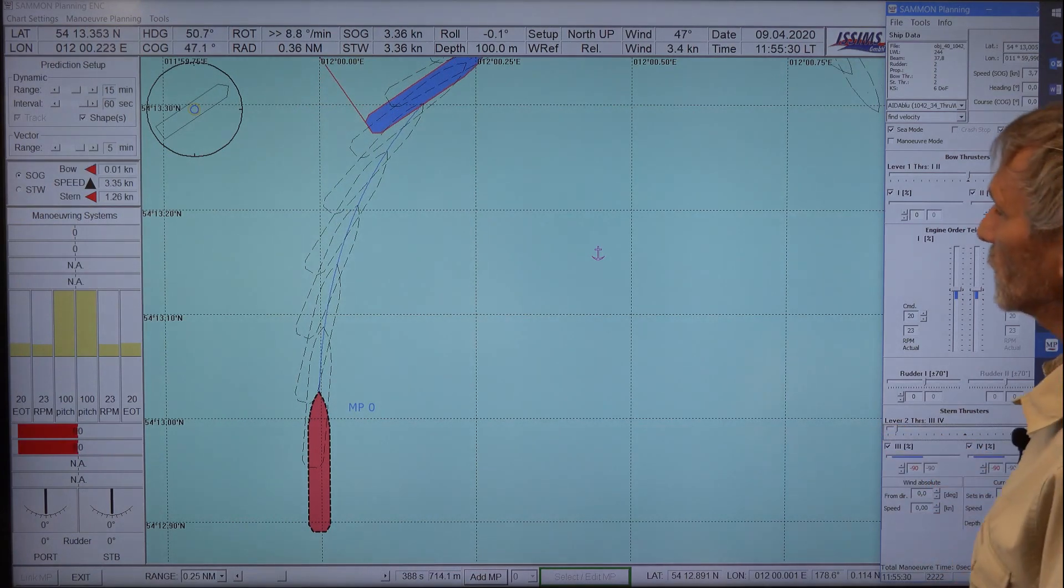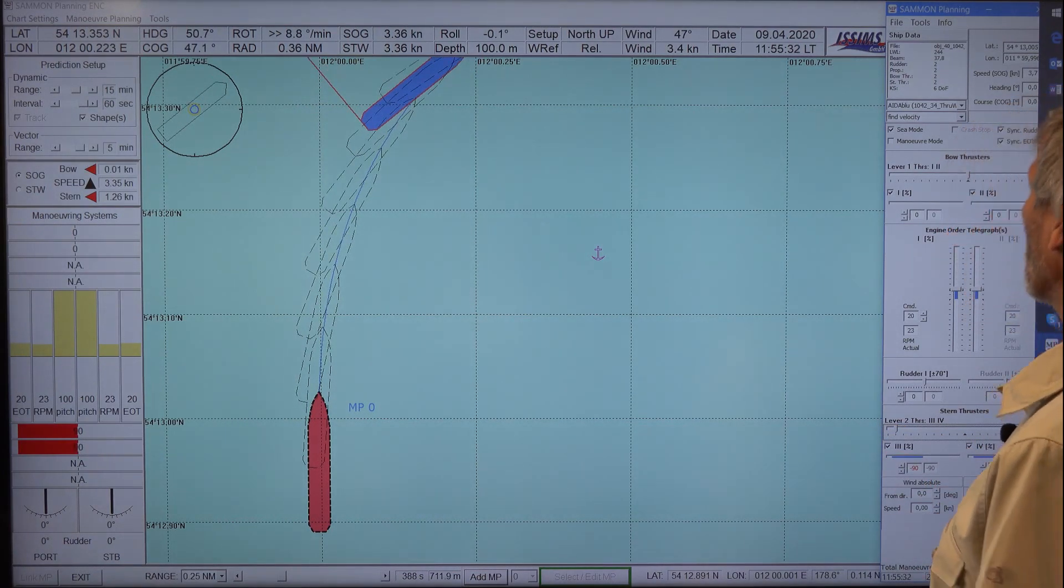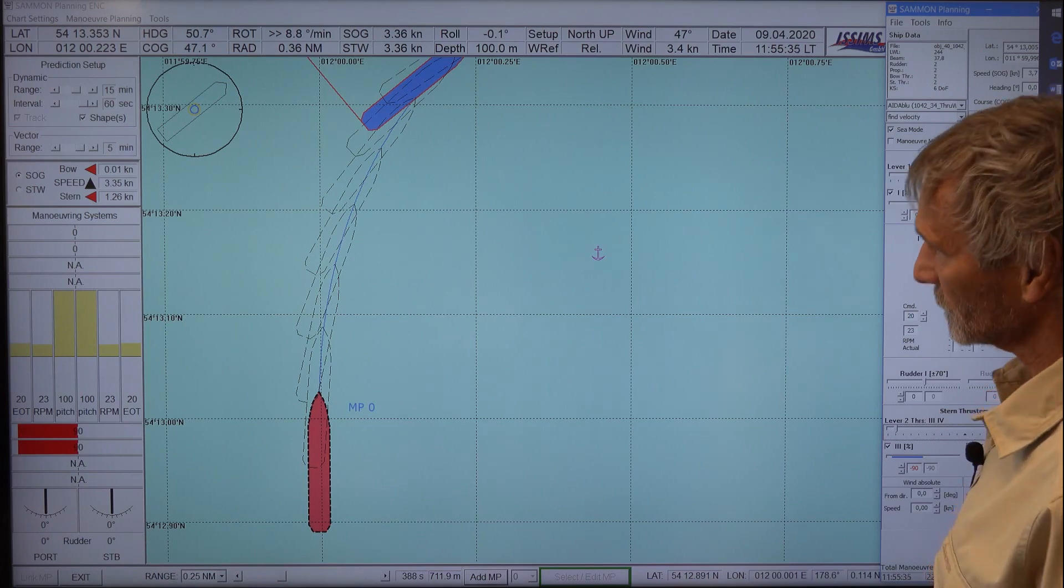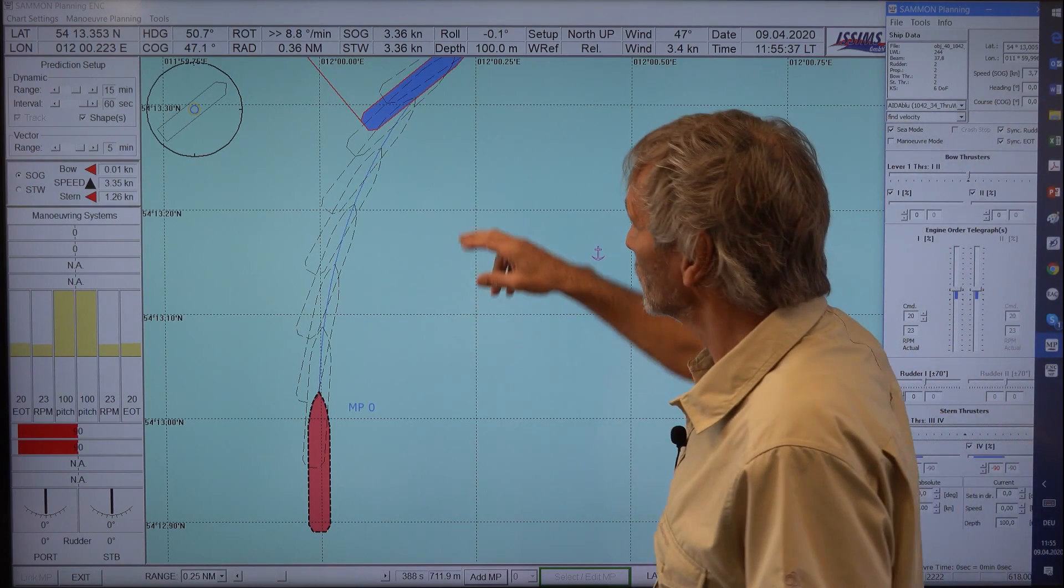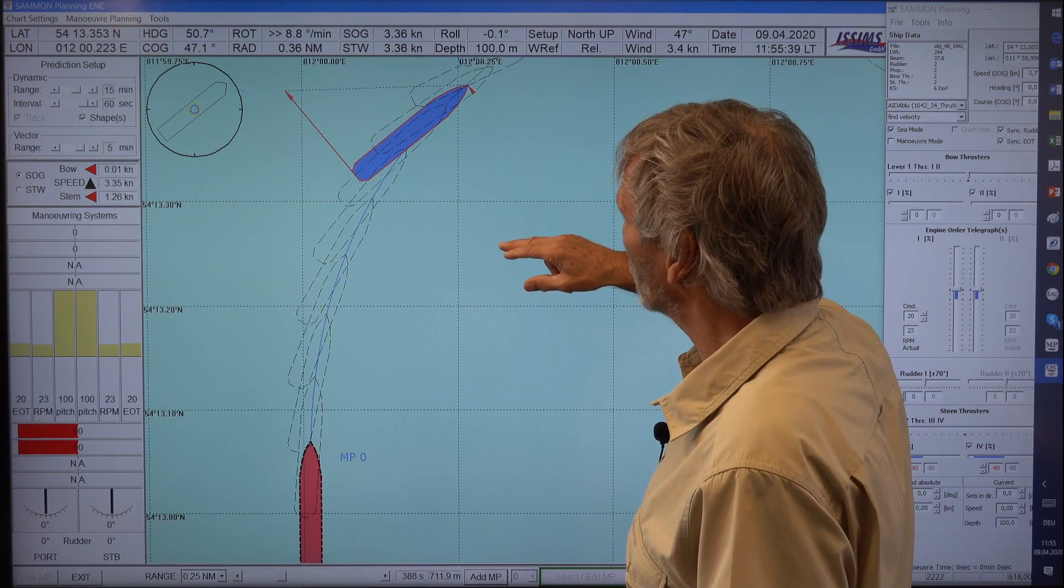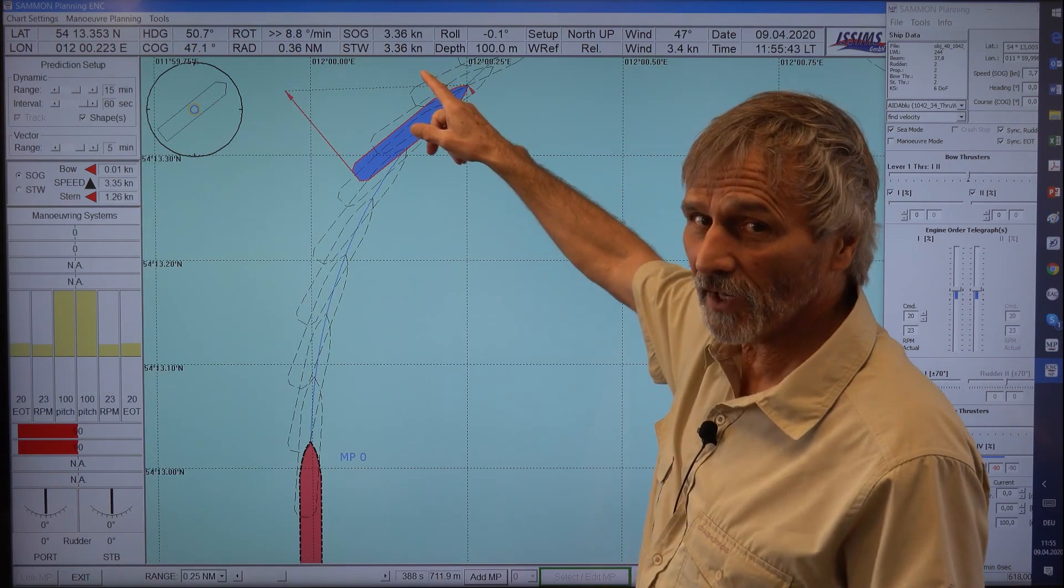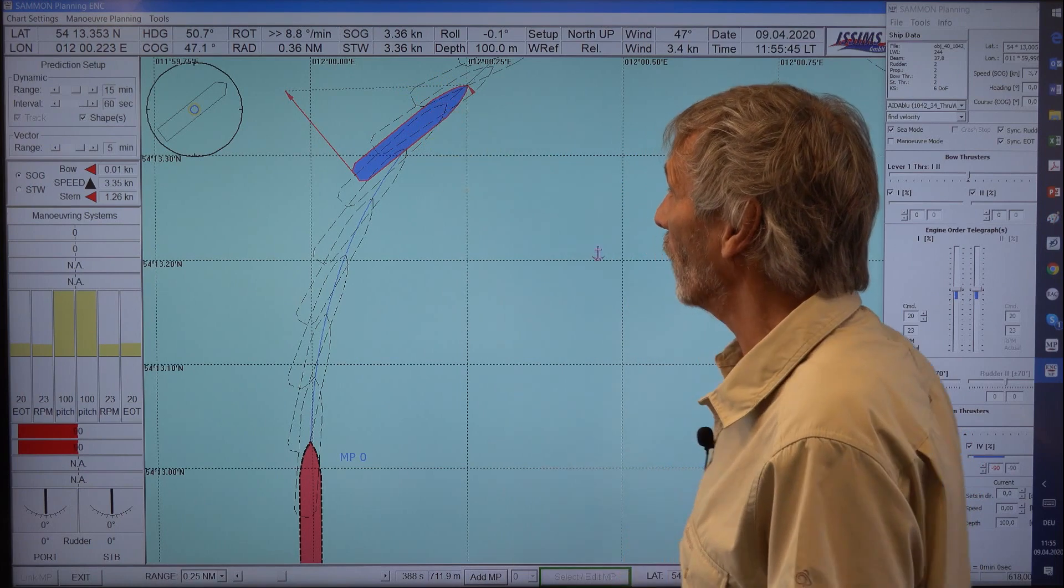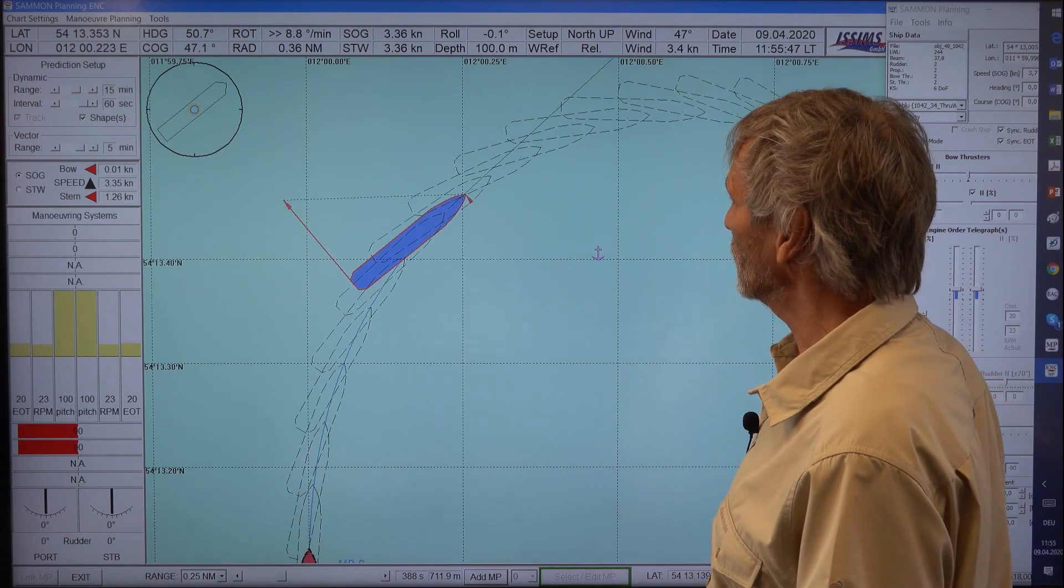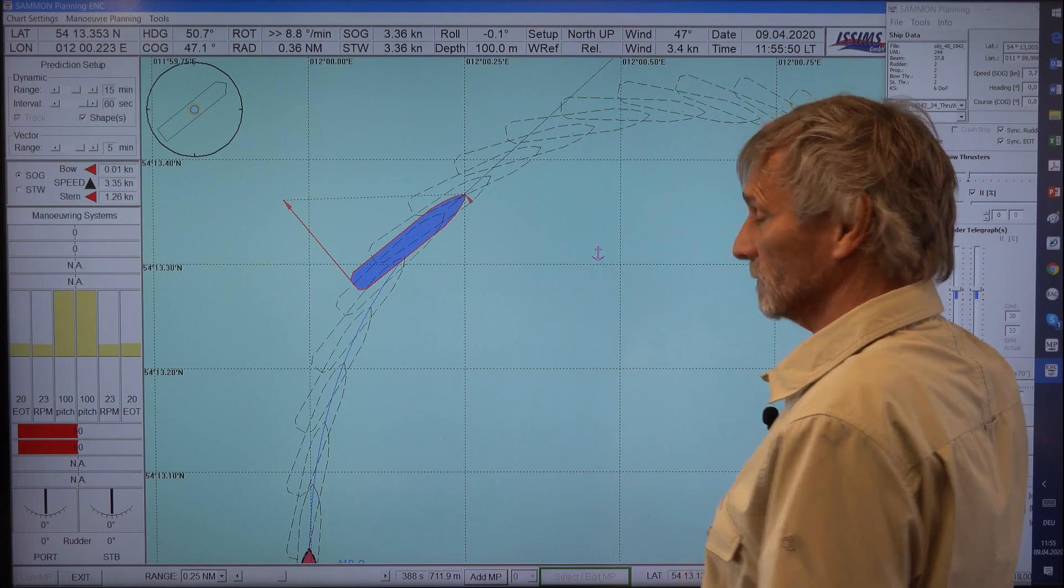So what you see is the stern thruster is not so much effective, but what you see is that the pivot point again is very much in front. So it's nearly at the bow. It's nearly at the bow, you see. And also drift angle.